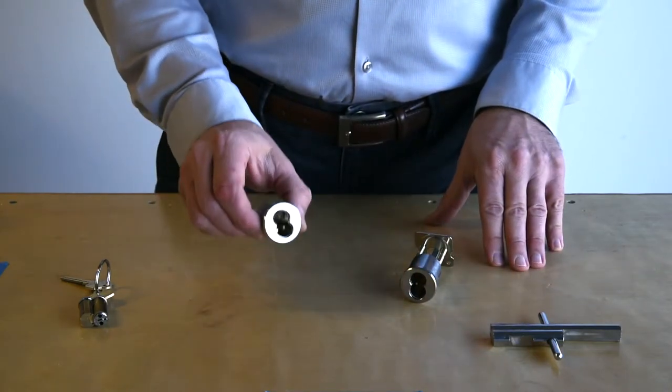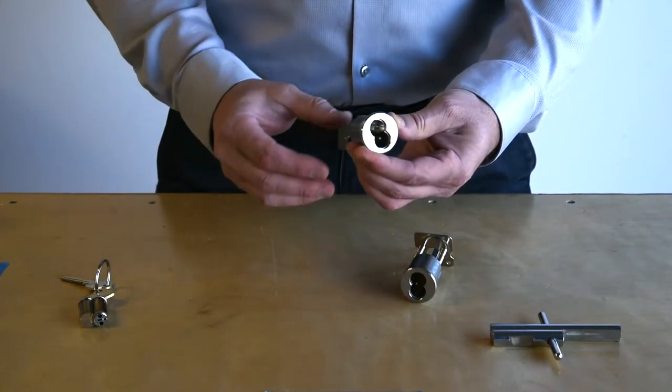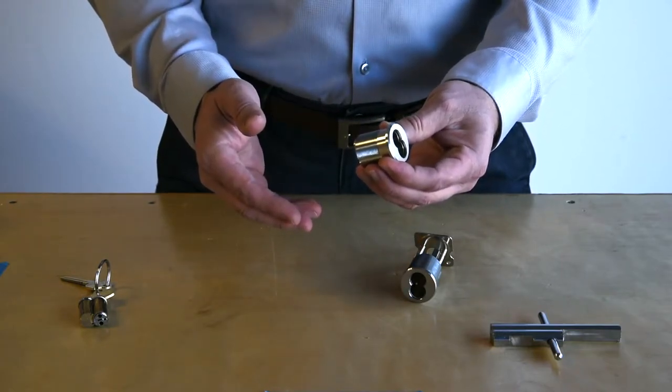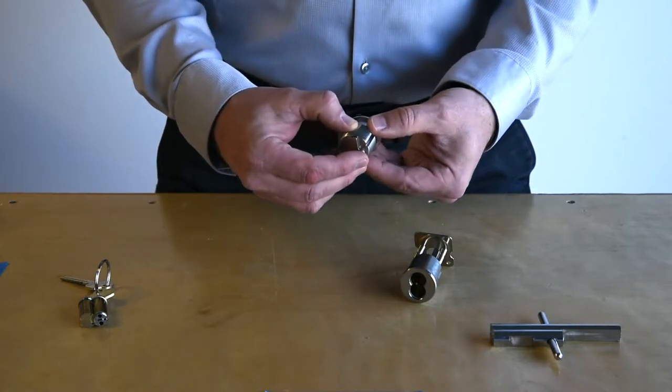The mortise cylinder can be used in many different types of applications, primarily in a mortise lock or any type of apparatus that requires a cam to operate the locking and unlocking function of the lock.